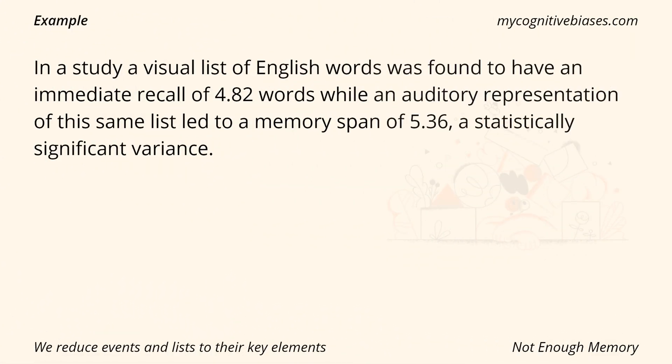Example: In a study, a visual list of English words was found to have an immediate recall of 4.82 words, while an auditory representation of this same list led to a memory span of 5.36 — a statistically significant variance.